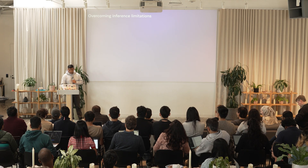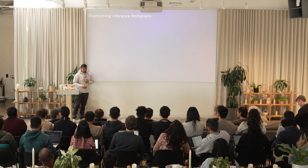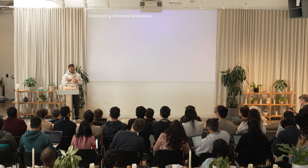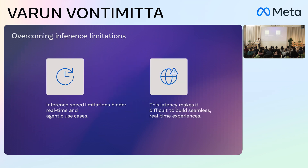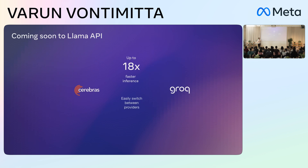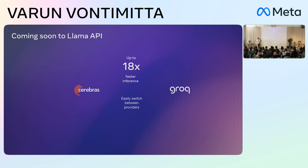As we were building this, we realized that the speed at which these tokens are generated is not sufficient for agentic applications. So we started working with some of the fastest inferencing providers in the industry today. We are very happy to say that we will be opening up all developers to be able to use the Llama API through Cerebras and Groq. So what this means is you implement it on the Llama API, add an attribute saying you want to use Cerebras or Groq as your provider, and it makes it easy for you to switch between different inference providers and get the speed you're looking for.